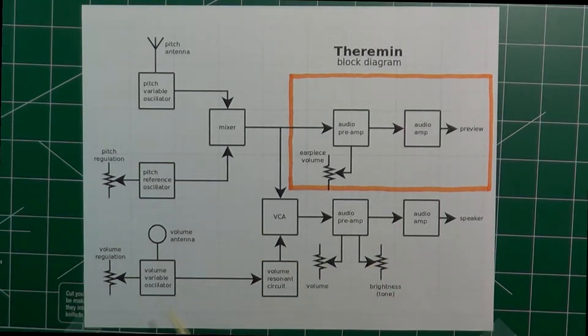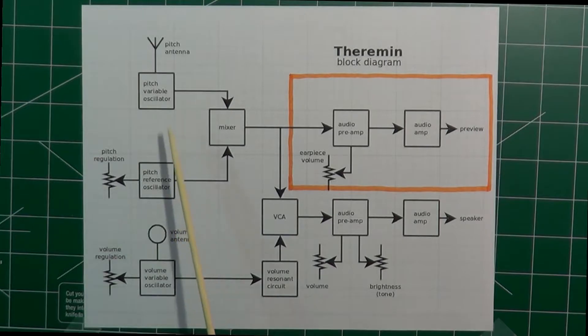So let's start looking at this block diagram. The first of these oscillators is the pitch reference oscillator, and the second oscillator is called pitch variable oscillator.